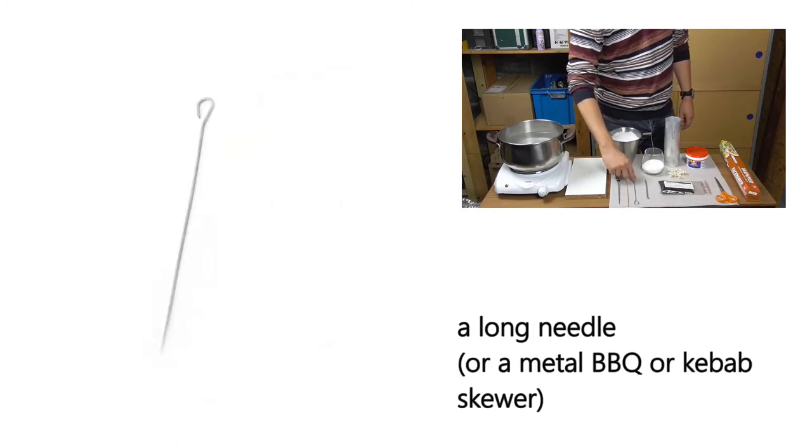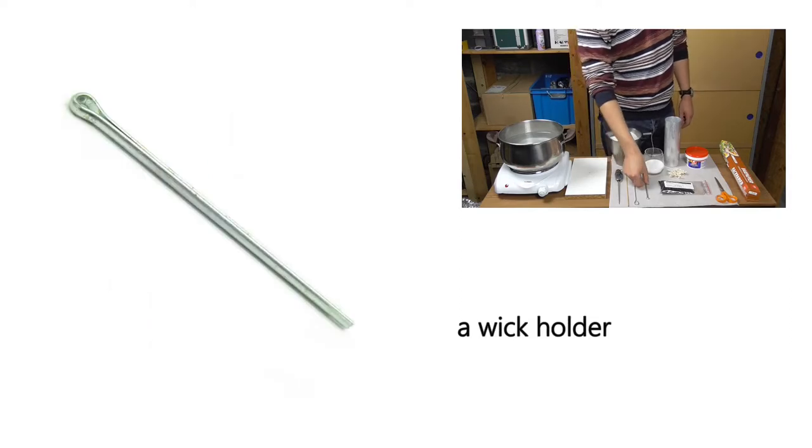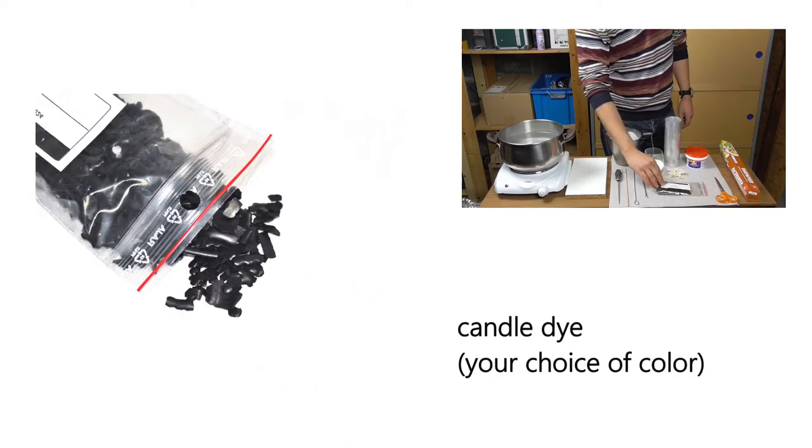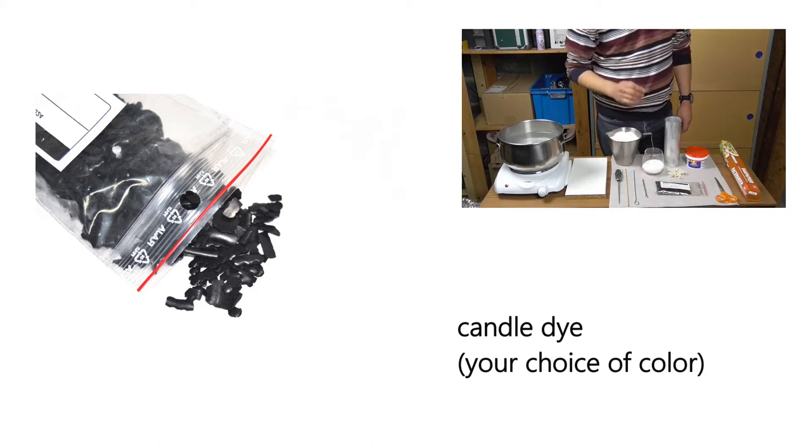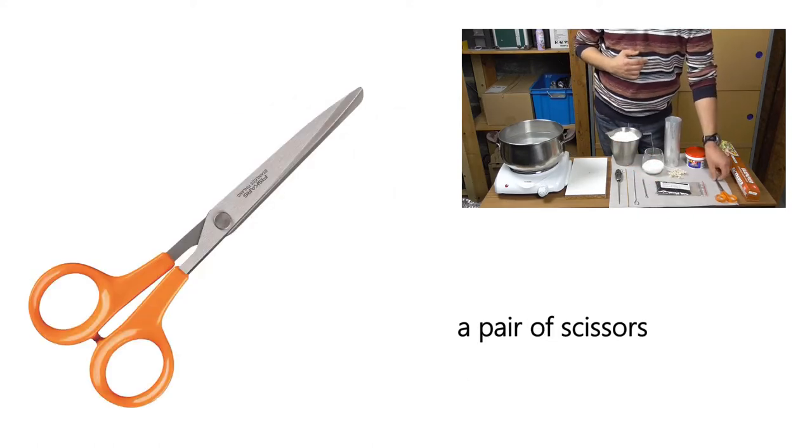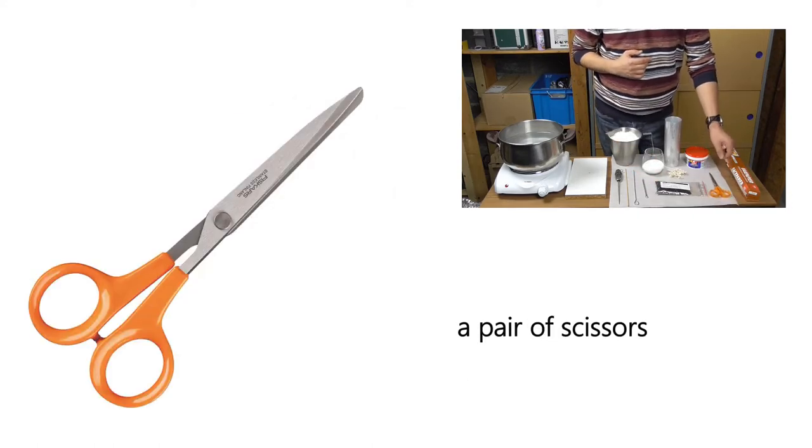A long needle to make the relief holes. Again, it can be just a metal kebab stick. A wick holder to keep the wick straight and centered. Some candle dye, your choice of color. I went with black for this project. A pair of scissors to cut and trim the wick.